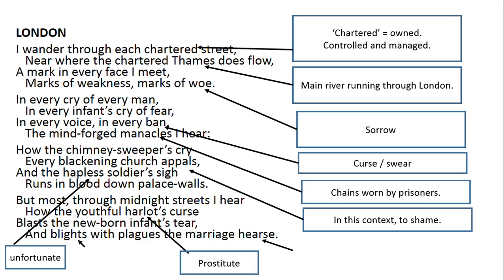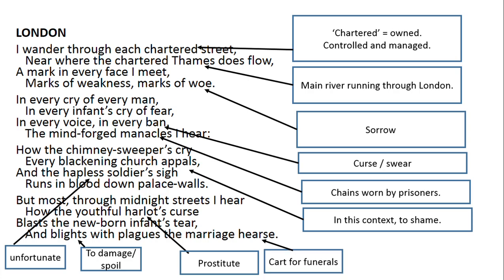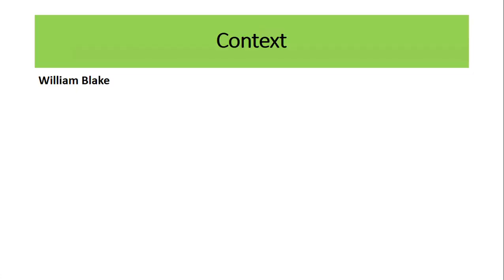It was a thankless job, and soldiers fought for king and country, which is why Blake attributes their suffering to the palace's fault. In the last stanza, harlot is a term for prostitute — youthful highlights how young they are. The girls were forced into prostitution just as boys were forced into the chimneys. To blight something is to damage or spoil it, and the hearse — back in Blake's time a cart for funerals — closes the poem on that note.